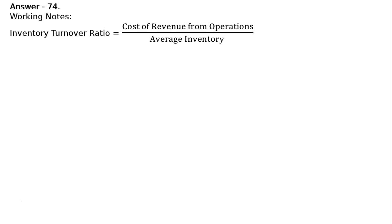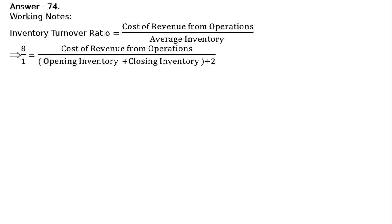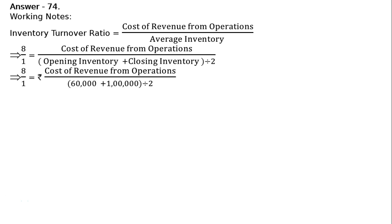Working notes: Inventory turnover ratio is given as cost of revenue from operations divided by average inventory. That is, 8 upon 1 equals cost of revenue from operations divided by opening inventory Rs. 60,000 plus closing inventory Rs. 1 lakh, whole divided by 2.